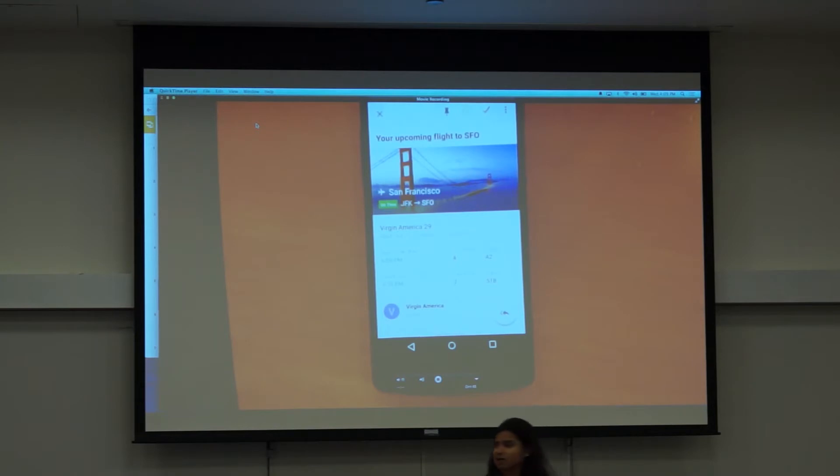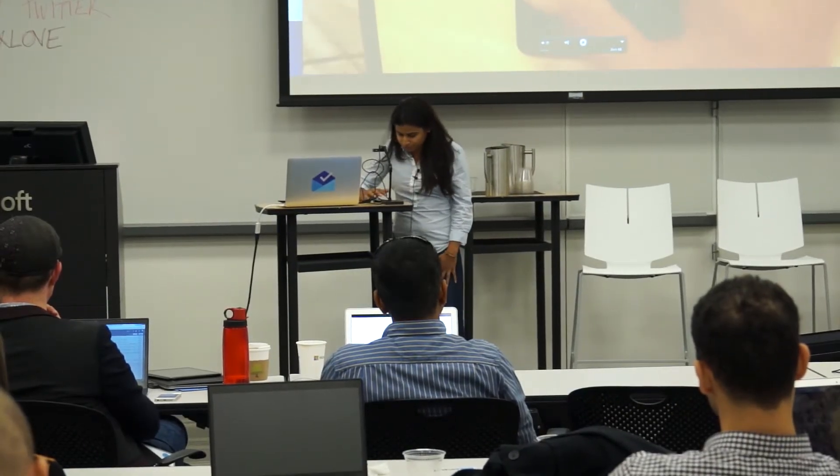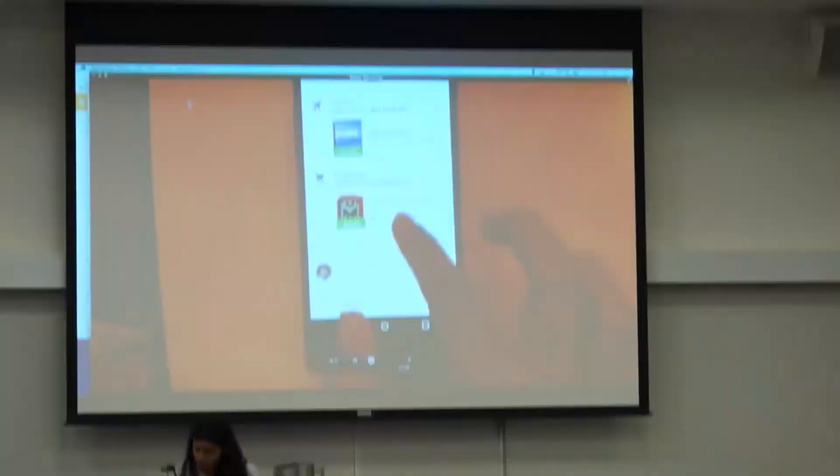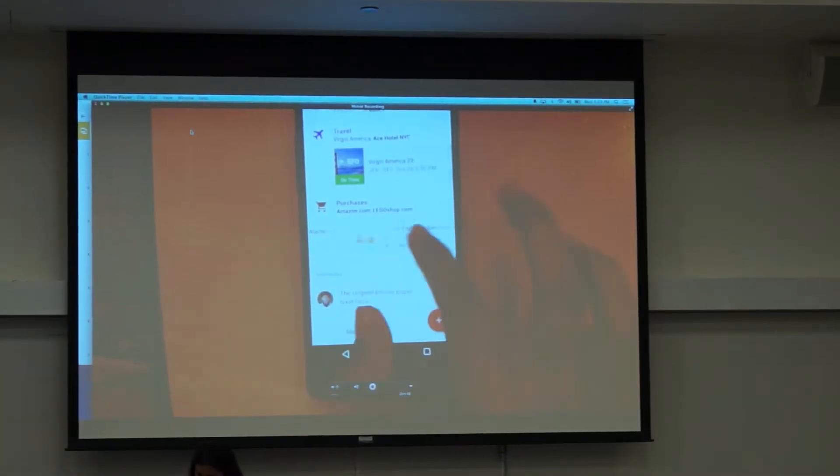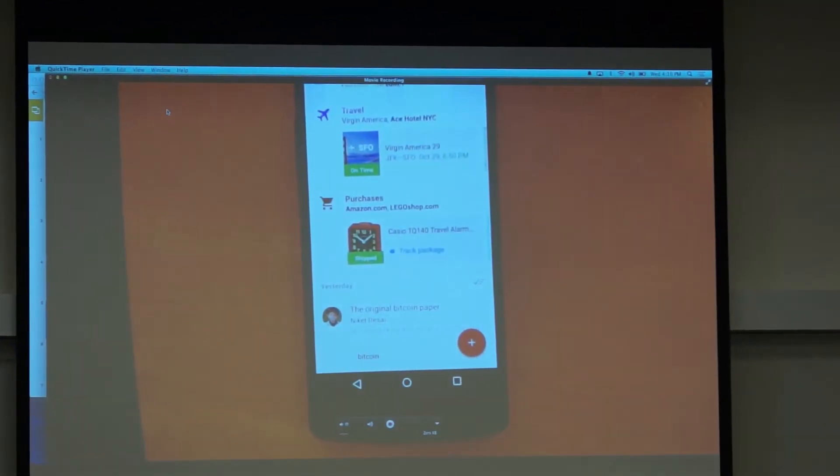It also has, not only does it have the information that's inside the email, visible at a glance, it also goes out to the web and gets more information. So it'll tell you if your flight's on time or delayed. It'll tell you the terminal and gate information and it'll keep it up to date. So we call this highlights. And we really want to highlight the key information that's inside that email right at the top level. So there's no more hunting and pecking for information. There's no more 10 steps to try and find what you need.